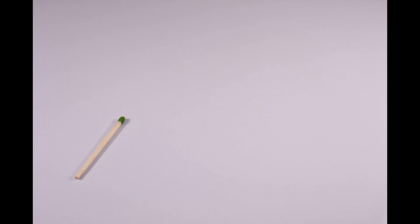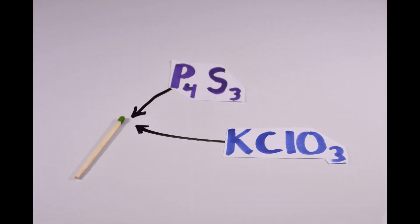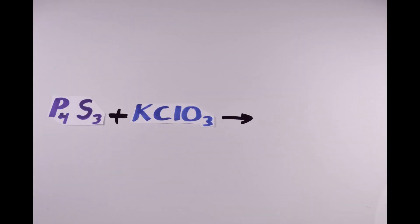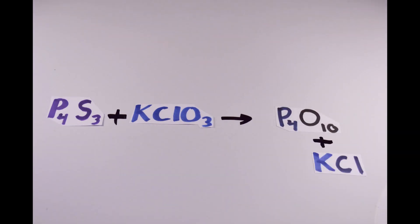Now, if you're curious how this works, the match head is composed of phosphorus sesquosulfide and potassium chlorate. When the phosphorus sesquosulfide and potassium chlorate are mixed and exposed to shock from friction or pressure, the combination yields an exothermic reaction yielding potassium chloride, phosphorus pentoxide, and heat.